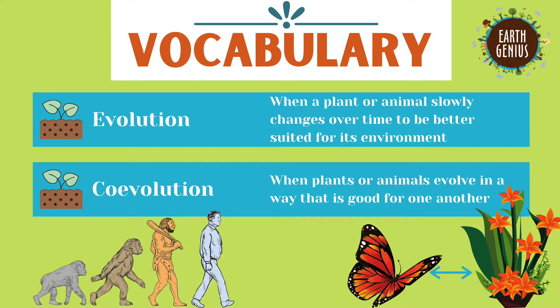When adaptations like that build up over time, that's called evolution. It's when a plant or an animal slowly changes to be better suited for its environment, normally through the process of adaptations.